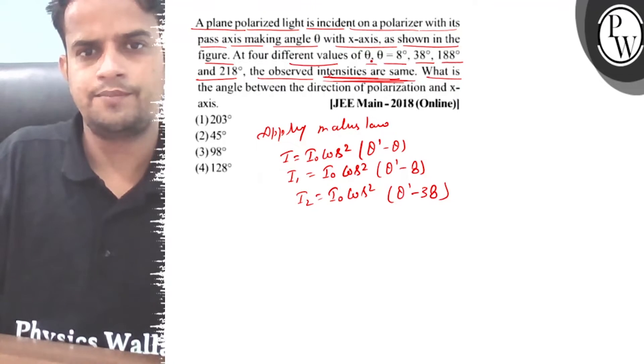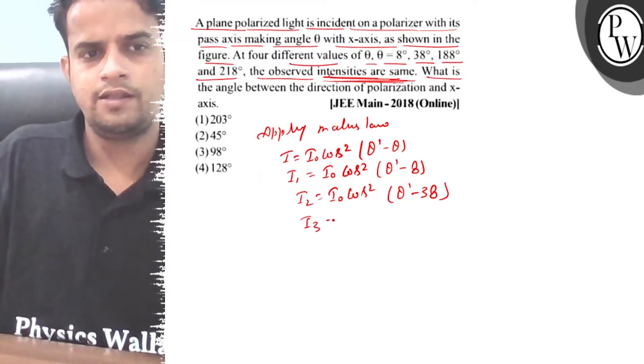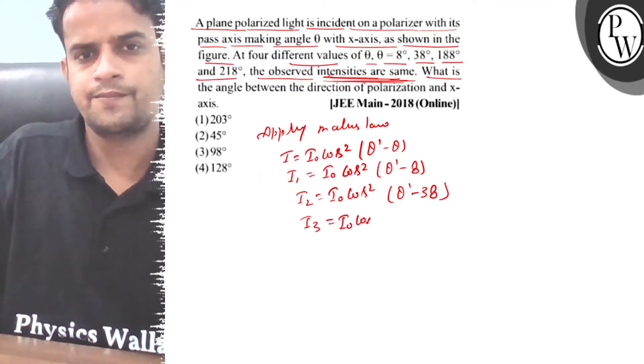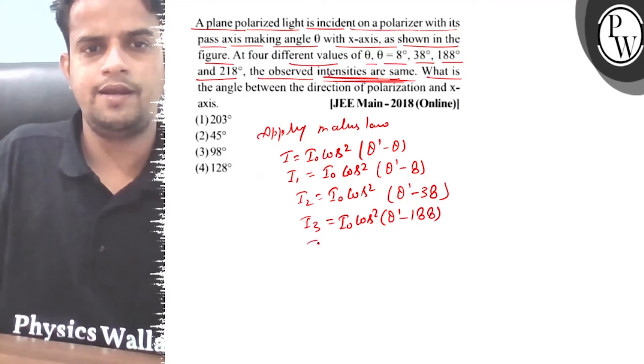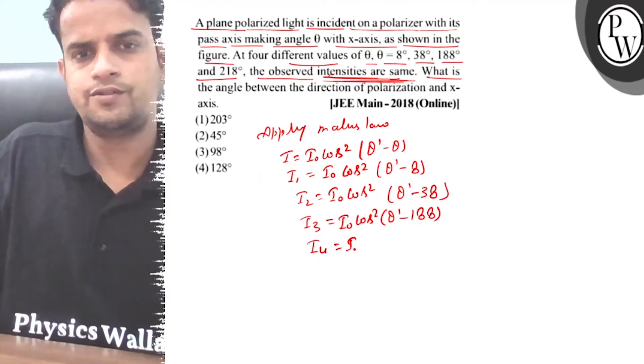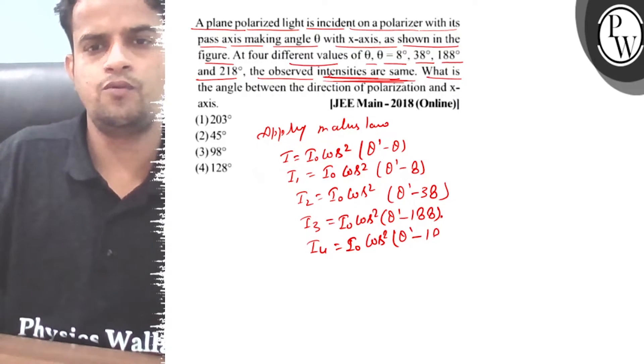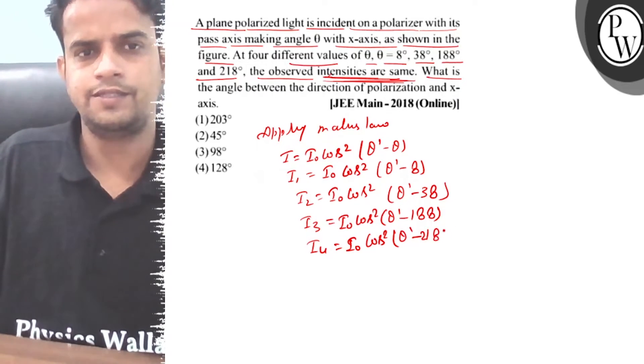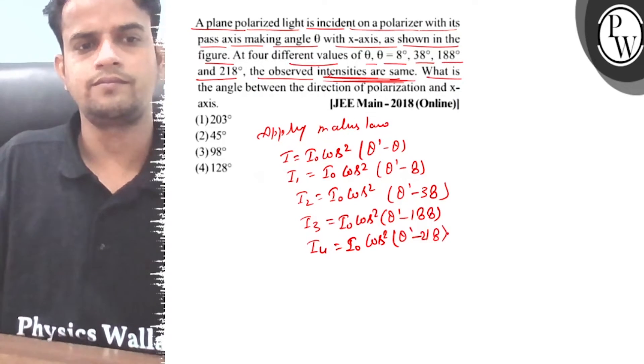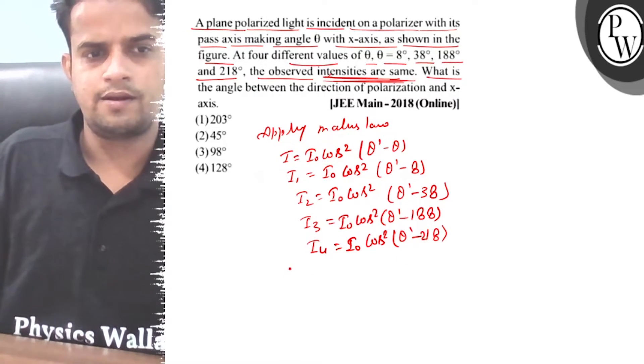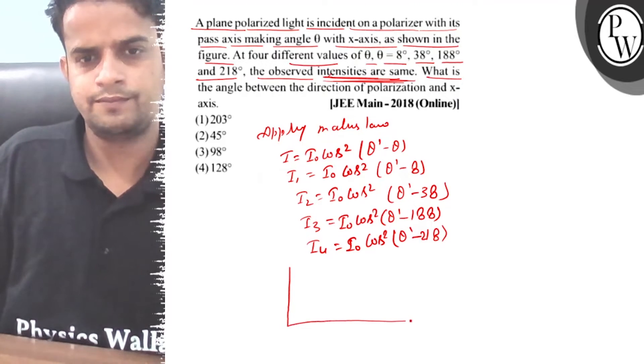For theta equals 188 degrees, I3 equals I naught cos square theta dash minus 188 degrees. For 218 degrees, I4 equals I naught cos square theta dash minus 218 degrees.